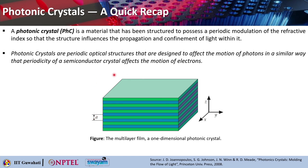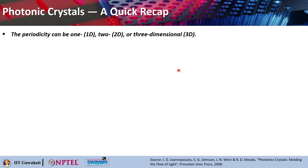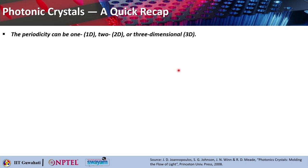Photonic crystals are periodic optical structures that are designed to affect the motion of photons in a similar way that the periodicity of a semiconductor crystal affects the motion of electrons. There is a direct analogy between semiconductor physics and photonic crystals. Photonic crystals are also sometimes called semiconductor crystals for light. The periodicity can be in one dimension, two dimensions, or three dimensions, and that way photonic crystals are also called one-dimensional, two-dimensional, or three-dimensional photonic crystals. In fact, you can actually make quite complicated structures that possess very interesting optical properties.